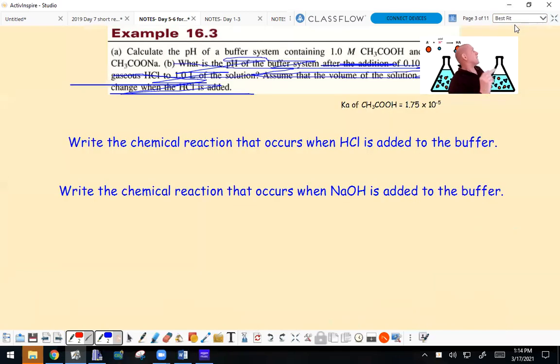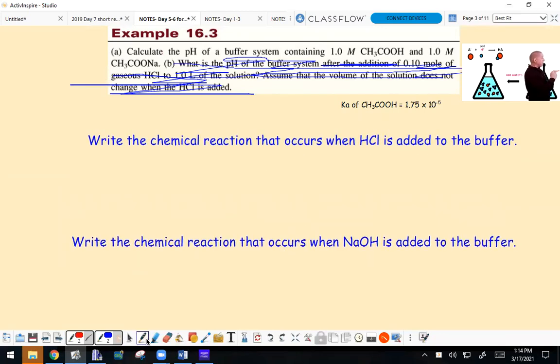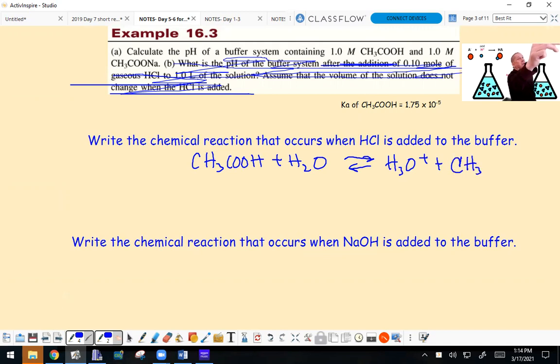I did this in the other video, but I'll do it again. We have a buffer system containing CH3COOH and CH3COO-. The sodium is the spectator ion. This is the weak acid and its conjugate base.